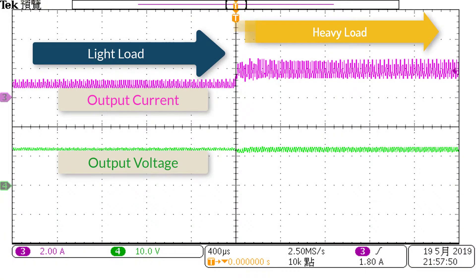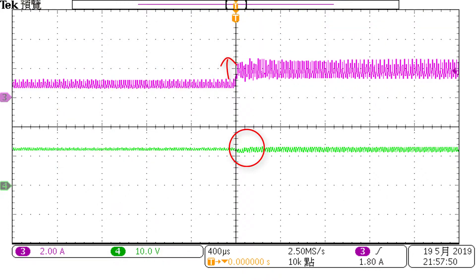With the type 3 compensator included, it can be seen that as we move from a light load to a heavy load, there is a short transient before the output voltage returns to 12V. There is, however, an excessive ripple which needs to be dealt with.